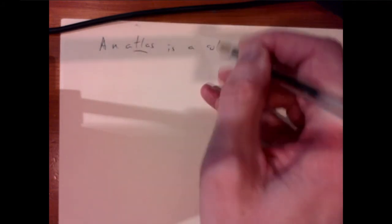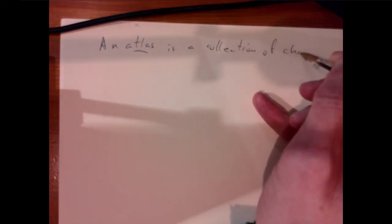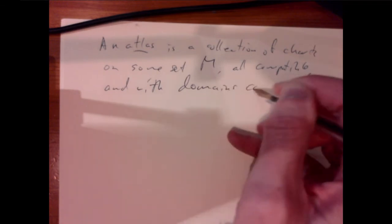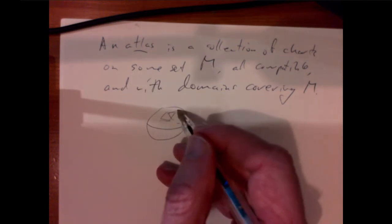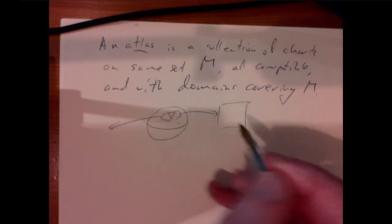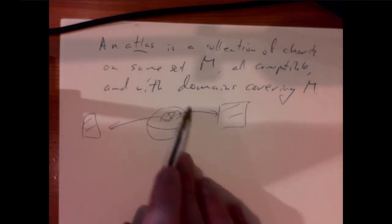When we actually make maps of the real world, we bind them together into books. An atlas is a collection of charts on some set M, all compatible with one another, with their domains covering M. So we cover the whole thing in a bunch of charts — just as if you went to a shop and bought an atlas, you'd be buying a collection of maps of the Earth's surface, and they'd cover the entire surface.